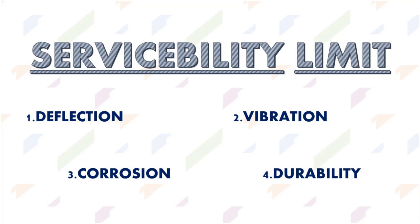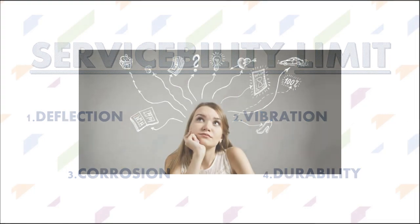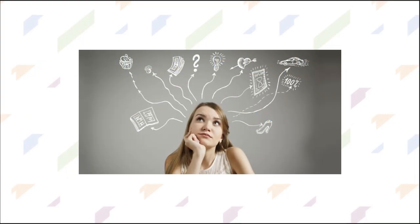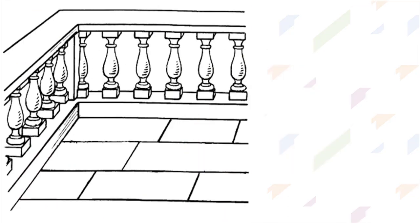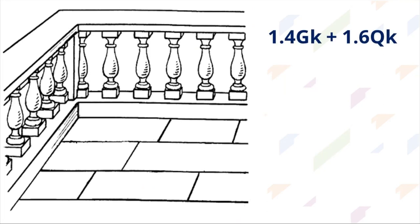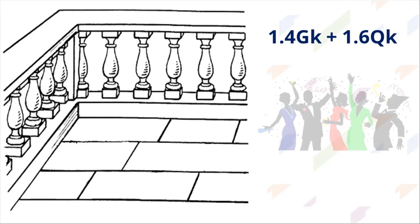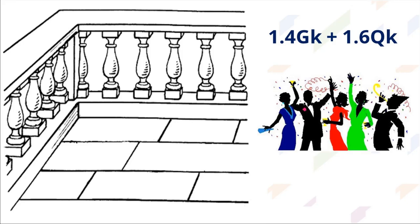The serviceability limit state generally controls the safe use of the structure and does not lead to immediate failure if exceeded. To help visualize this, let's think of a simple example — a balcony. Say you design your balcony using British codes: 1.4 G_K plus 1.6 Q_K, for a maximum of 20 people. If this load is exceeded — say there is a party and 30 people come onto the balcony — the balcony will fail because it was designed to carry a certain maximum load under the ultimate limit state.